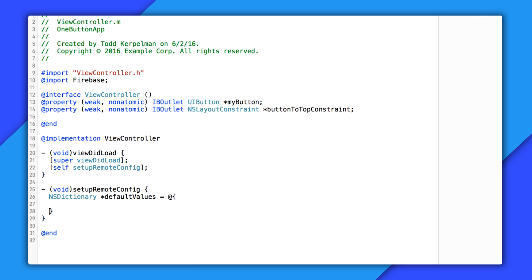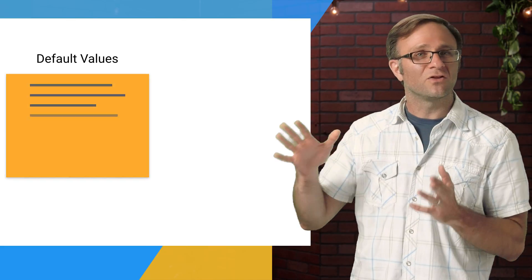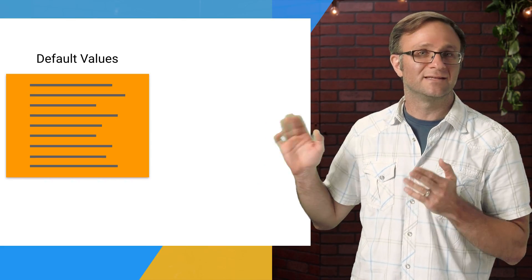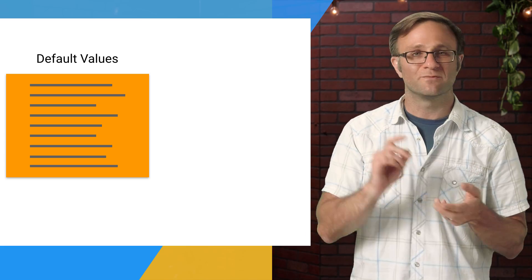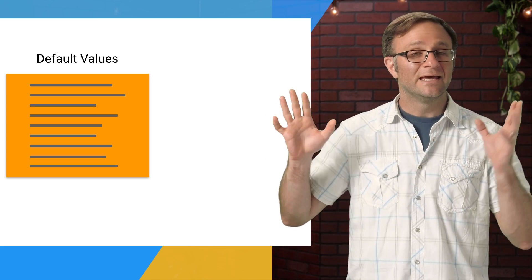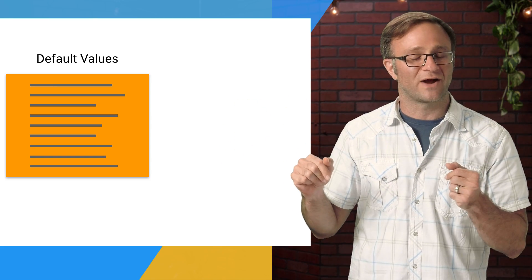Let's create our NSDictionary with our button text equal to "default", and our button constraint constant key equal to 50. If this were a real app, I wouldn't want to be typing out the names of these keys like that — that's bad form. Our recommendation is to put all the values you might ever want to change into this dictionary of default values, like all your hard-coded strings, magic numbers, and so on. In essence, this should replace whatever app constants file you've got lying around in your app.